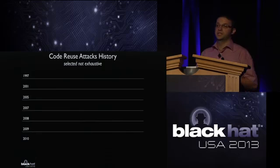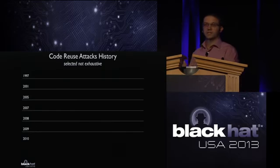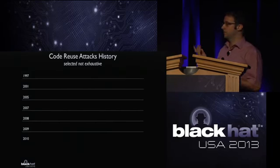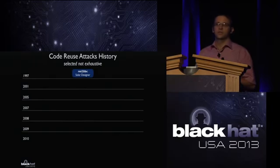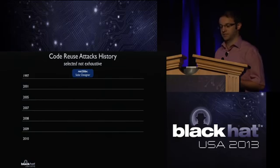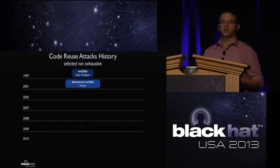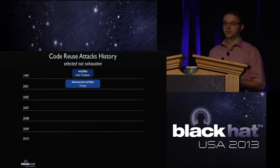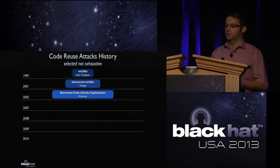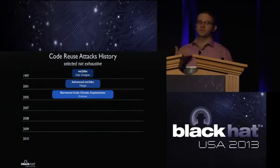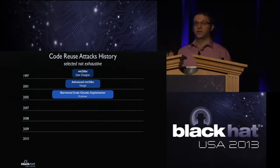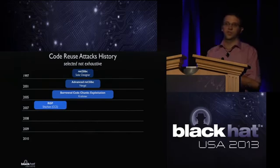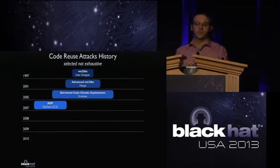Code reuse attacks have existed for years. In 1997, Solar Designer redirected execution to a libc function. In 2001, Nergal chained libc functions. In 2005, Krahmer presented Borrowed Code Chunks Exploitation, including basic ROP ideas. In 2007, Hovav Shacham finalized the concept in his return-oriented programming paper, showing it is Turing-complete, meaning you can run arbitrary computation. In 2008, Shacham presented ROP at Black Hat, and attacks appeared against SPARC and AVR embedded processors.